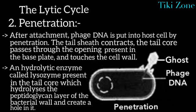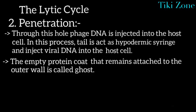The next stage is penetration. After attachment, phage DNA is injected into the host cell. The tail sheath contracts, and the tail core passes through the opening in the base plate and touches the bacterial cell wall. A hydrolytic enzyme called lysozyme, present in the tail core, hydrolyzes the peptidoglycan layer of the bacterial cell wall and creates a hole. Through this hole, the phage DNA is injected into the host cell — the tail acts like a hypodermic syringe. The empty protein coat remaining outside is called a ghost.